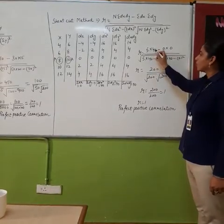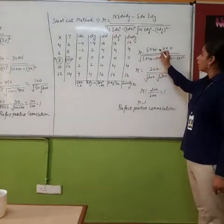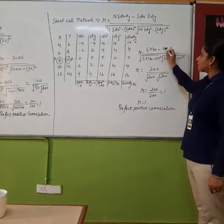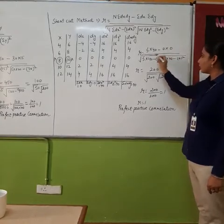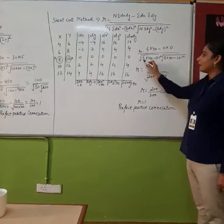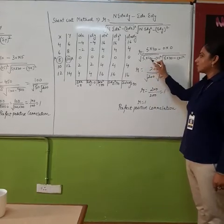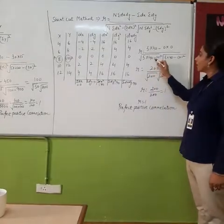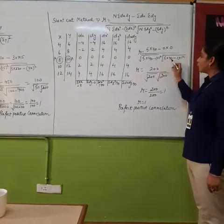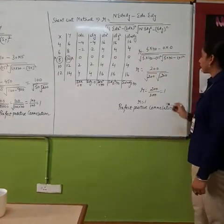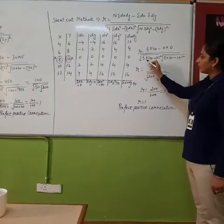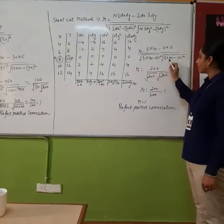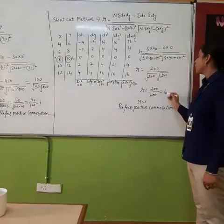So after filling the values in the formula, n is 5 into summation dx dy is 40 minus summation dx is 0, summation dy is 0, divided by n is 5, summation dx square is 40 minus 0 squared, then 5 into 40 because dy square is 40. So after sorting it out, it will be 200.